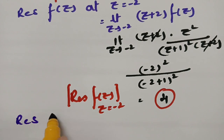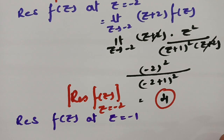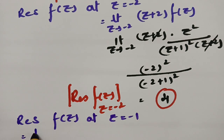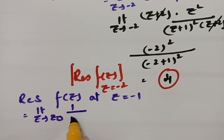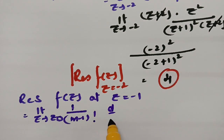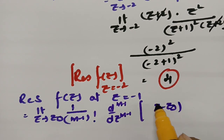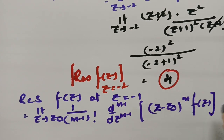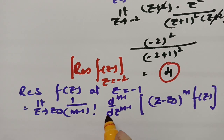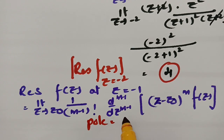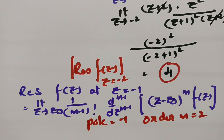Next, we have to find the residue of f(z) at z = -1, which is a pole of order 2. The formula for a pole of order m is: limit as z → z₀ of [1/(m-1)!] · d^(m-1)/dz^(m-1) [(z - z₀)^m · f(z)]. Here z₀ = -1 and m = 2.